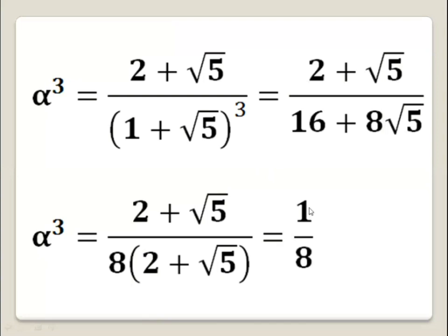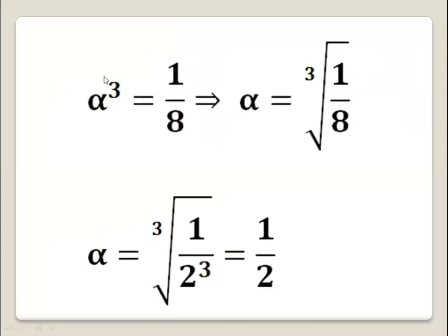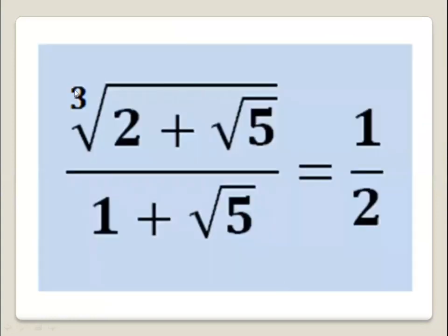Therefore alpha cubed equals 1 over 8. Then alpha equals the cubic root of 1 over 8. Since 8 equals 2 to the power 3, we have alpha cubed equals the cubic root of (1 over 2) all to the power 3. The power 3 and the cube root cancel each other, so alpha equals 1 over 2. Therefore this numerical expression — the cubic root of (2 plus square root of 5) all over (1 plus square root of 5) — equals 1 over 2.